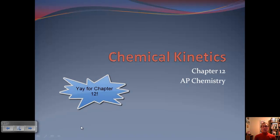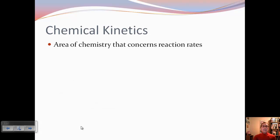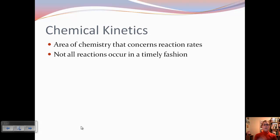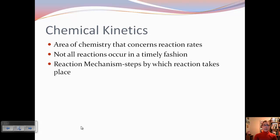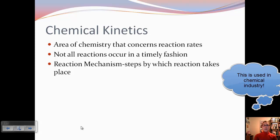Hello again. So we are going to start Chapter 12, which involves chemical kinetics. Chemical kinetics are an area of chemistry that concerns reaction rates — so how quickly do reactions happen. But not all reactions occur in a timely fashion, and so it helps if we know what's called the reaction mechanism. These are the steps by which the reaction takes place.